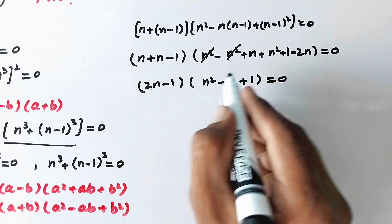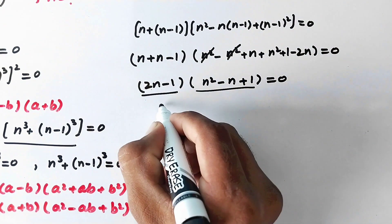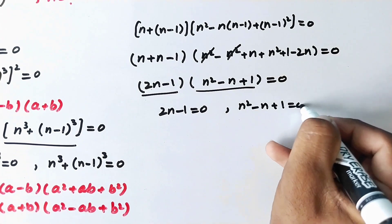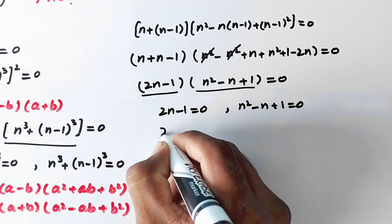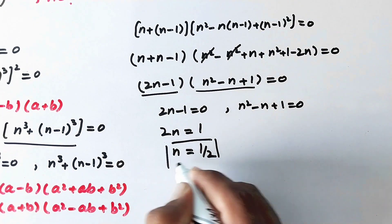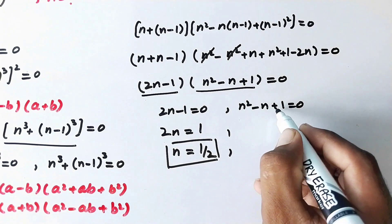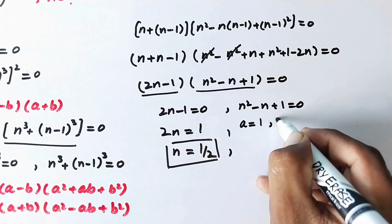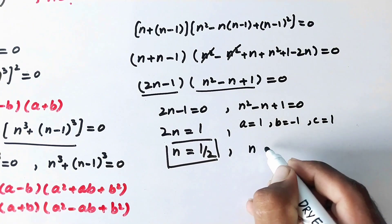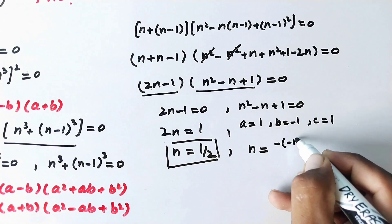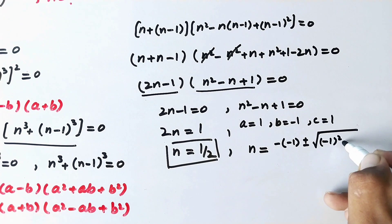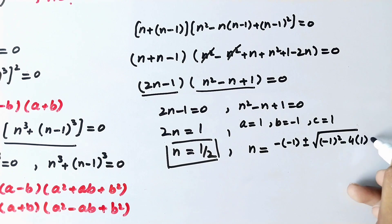We now have two factors equal to zero: 2n minus 1 equals 0, and n squared minus n plus 1 equals 0. From the first: n equals 1 over 2. For the quadratic, a equals 1, b equals minus 1, c equals 1. Applying the quadratic formula: n equals minus of minus 1 plus or minus square root of minus 1 squared minus 4 times 1 times 1, over 2 times 1.